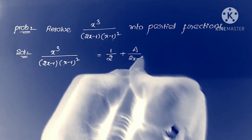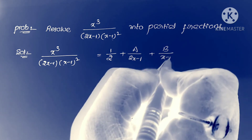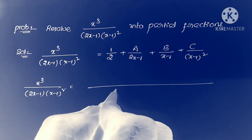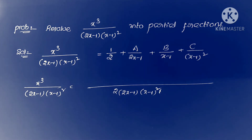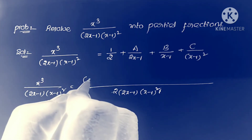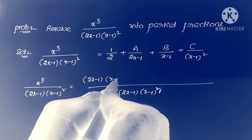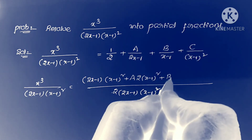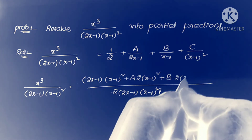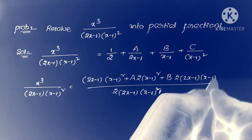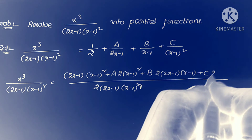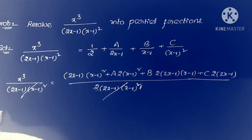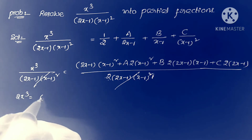So we write 1/2 plus partial fractions: A/(2x-1) + B/(x-1) + C/(x-1)². Taking LCM as 2(2x-1)(x-1)²: first term gives (2x-1)(x-1)²; A term gives 2(x-1)² since (2x-1) cancels; B term gives 2(2x-1)(x-1) since one (x-1) cancels; C term gives 2(2x-1) since (x-1)² cancels. After cross-multiplying, we get 2x³ = (2x-1)(x-1)² + A·2(x-1)² + B·2(2x-1)(x-1) + C·2(2x-1).